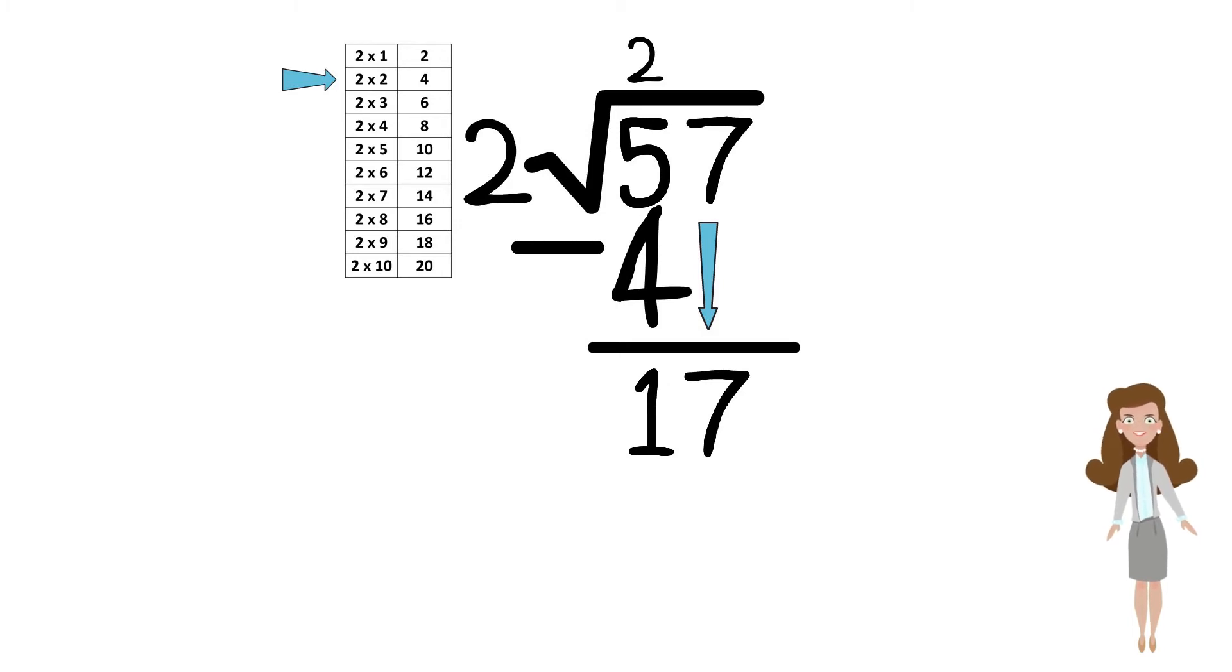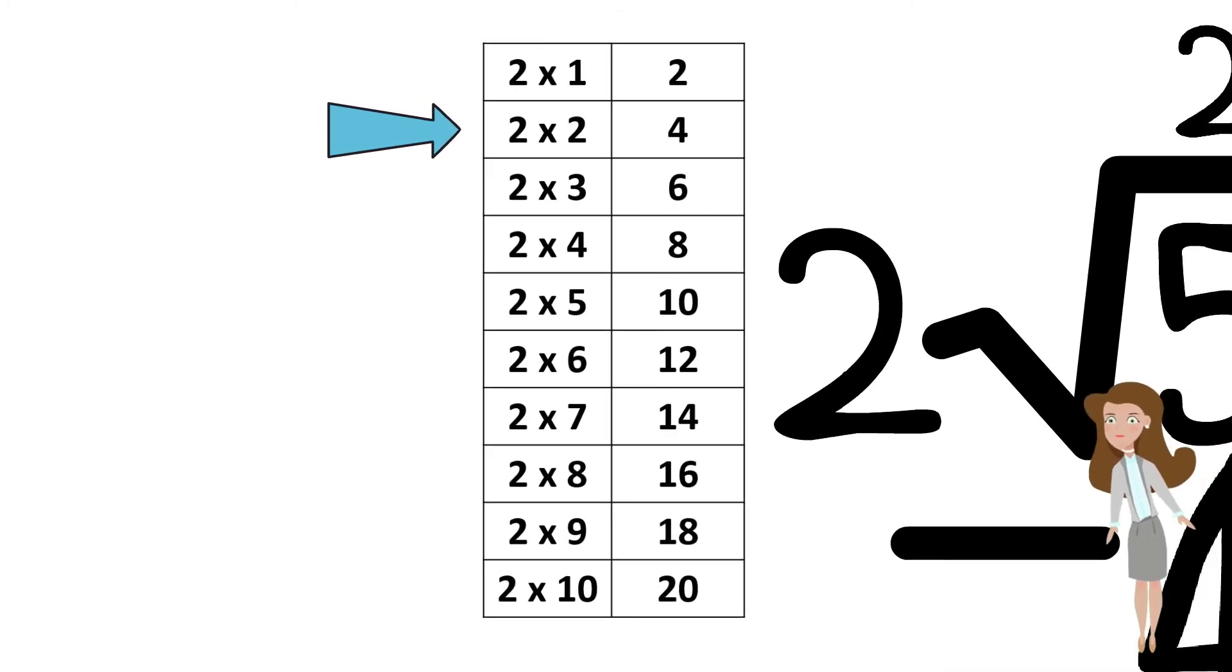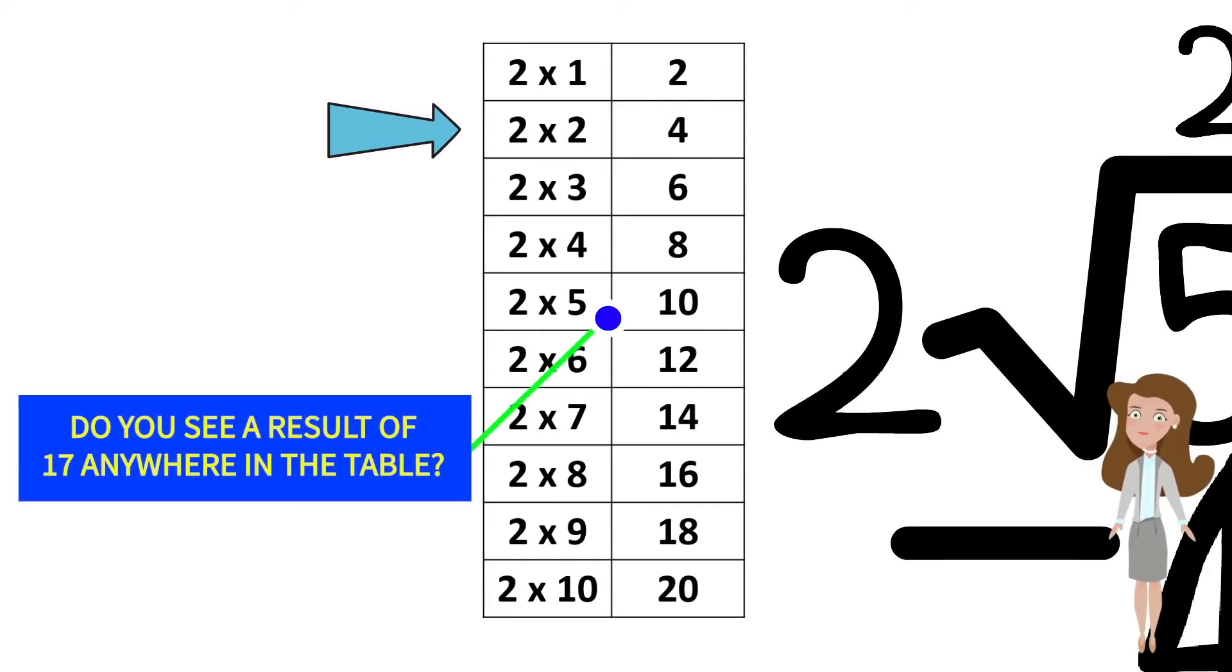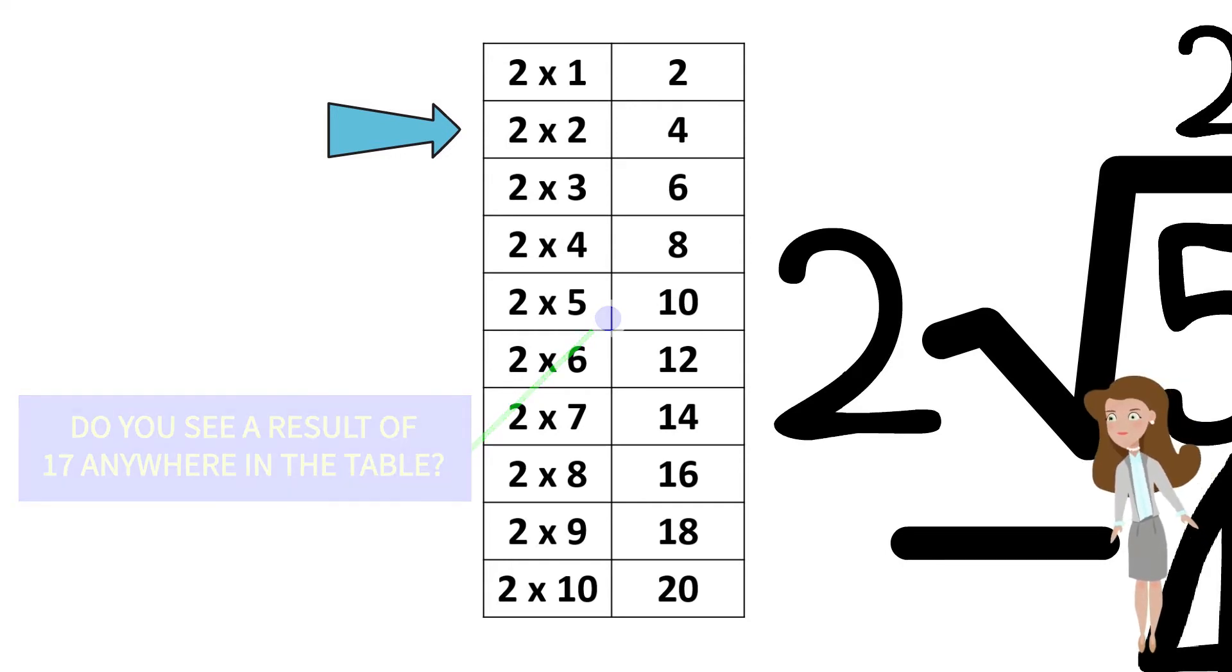Like we did earlier, let's check back with the 2 times table. Do you see a result of 17 anywhere in the 2 times table? No, you don't.